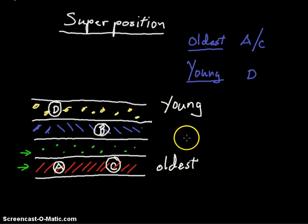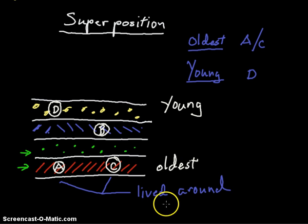The same would go if we were to think, okay, A and C are in the same layer. So A and C would have lived around the same time.